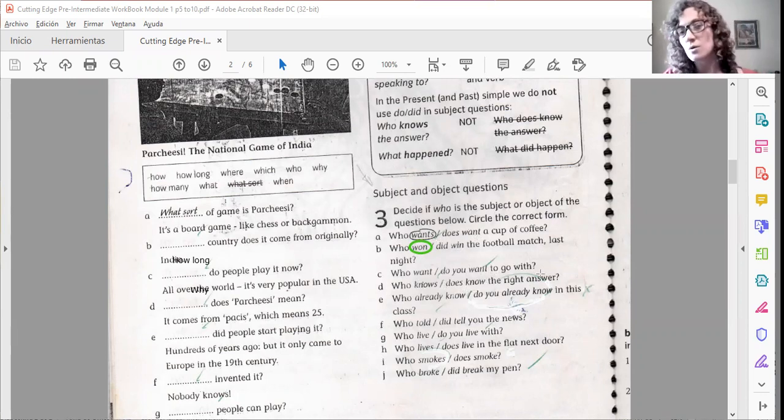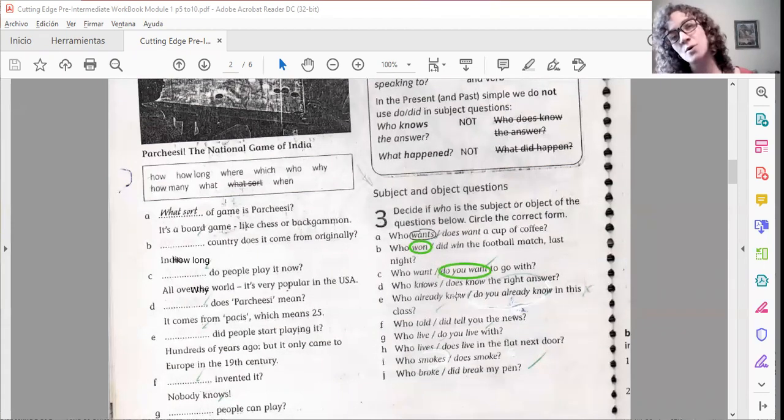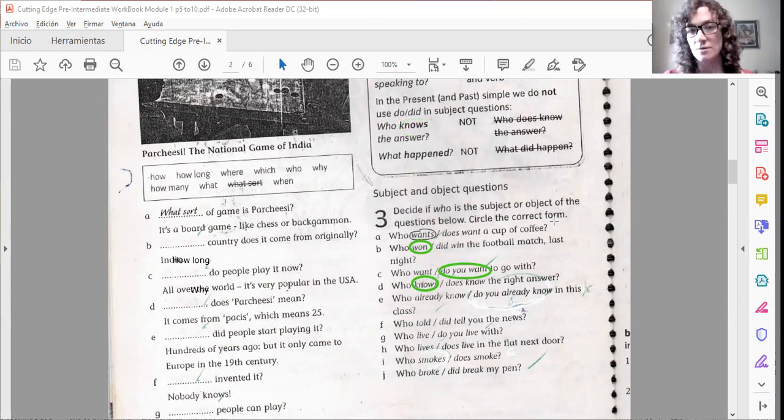Who want to go with or who do you want to go with? The correct option would be, who do you want to go with? Con quién quiere decir? No, quién va? Who knows the right answer or who does know the right answer? This is actually the same example as we've got here. So the correct option would be, quién sabe la respuesta correcta? Quién es el sujeto? Quién es el que sabe? Who do you already know or who do you already know in this class would be the second option. Who do you already know in this class? A quién conoces? It's object.